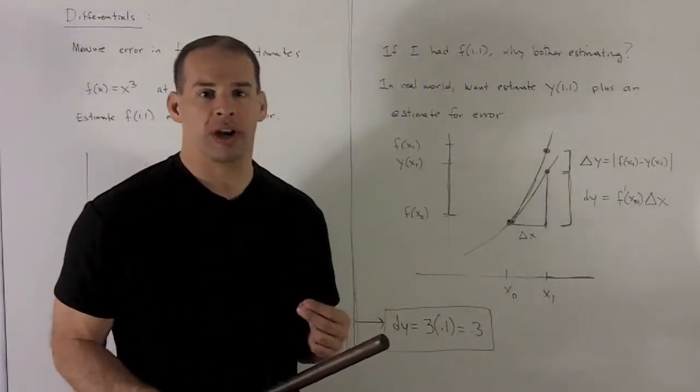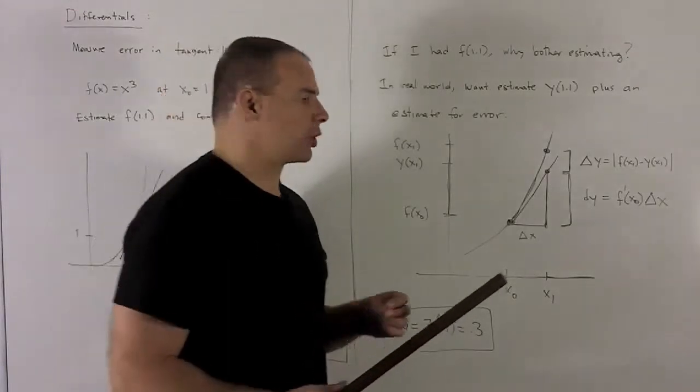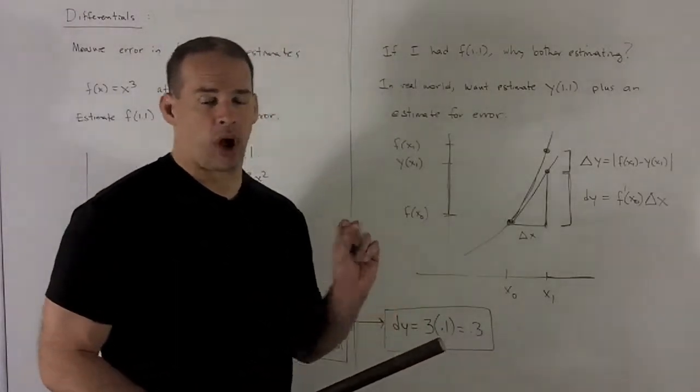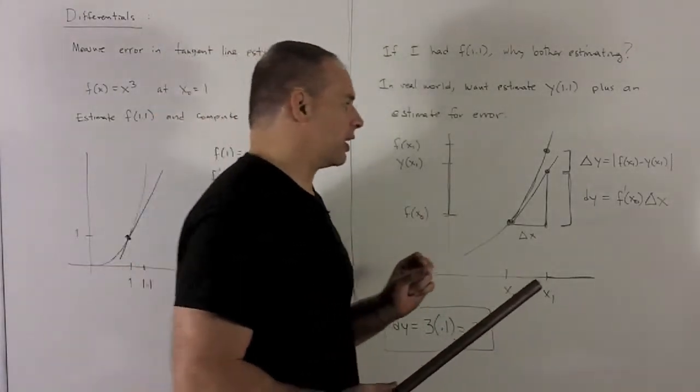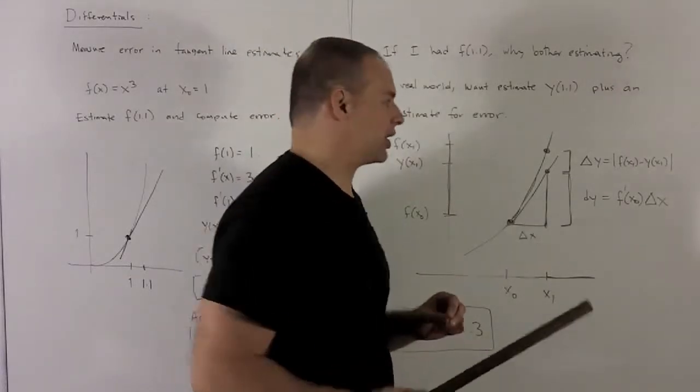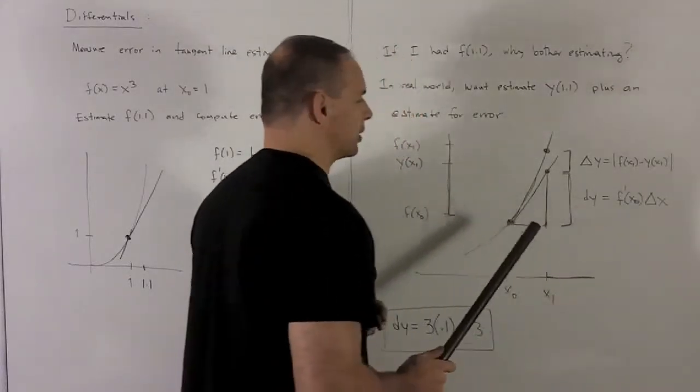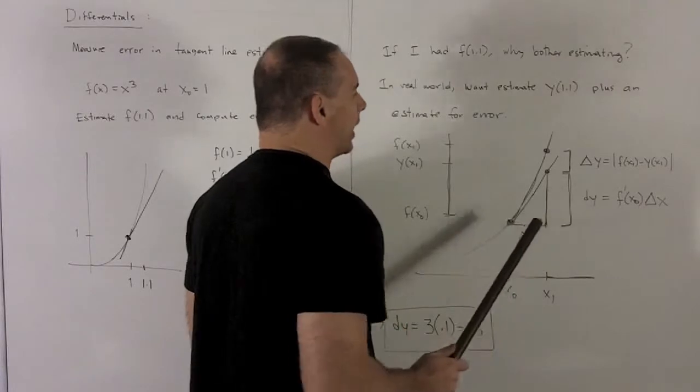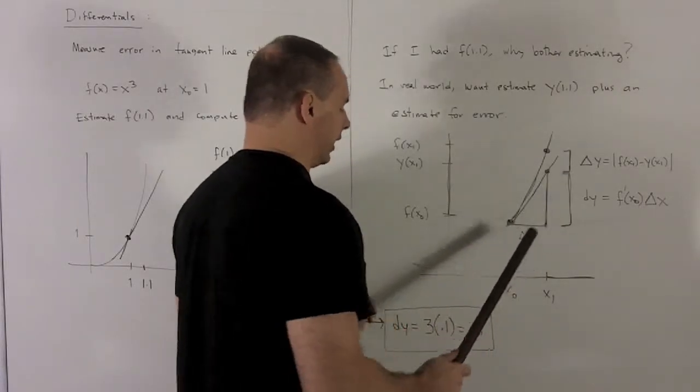That's because the rise over the run is equal to the slope. So I just push the run to the other side, and that gives me the equation f'(x0) times delta x. So that's what I'm going to call dy. That's going to be our estimated error.